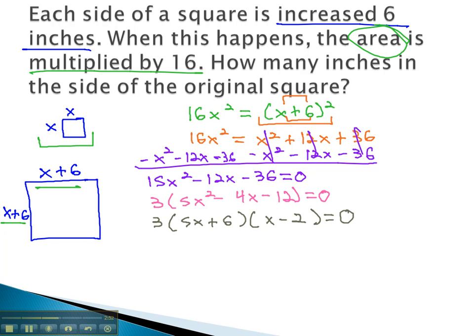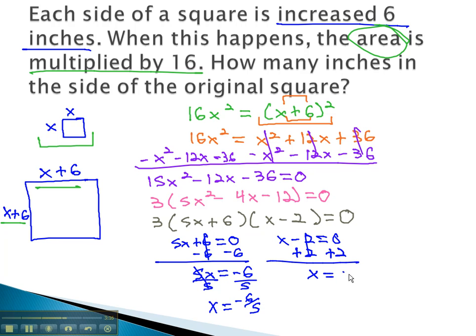Now, we can solve by setting each factor equal to 0. 5x plus 6 equals 0, or x minus 2 equals 0. Solve the first equation by subtracting 6 to get 5x equals negative 6, and dividing by 5 to get x equals negative 6 fifths. We can solve the second equation by adding 2 to get x equals 2.